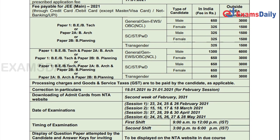First, we are going to see the fee structures. For Paper 1 (B.E./B.Tech) or Paper 2A (B.Arch) or Paper 2B (B.Planning), the fee for male candidates is ₹650 and for female candidates is ₹320. For candidates outside India, male is ₹3000 and female is ₹1500. For SC/ST male and female, the fee is ₹325, and for SC/ST candidates outside India, it is ₹1500 for both.